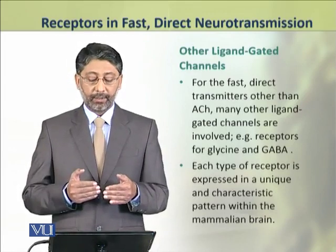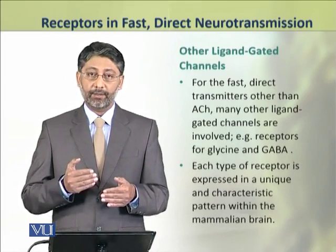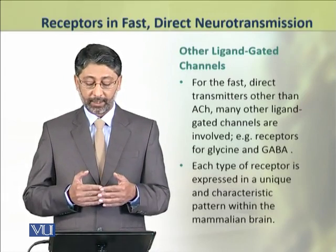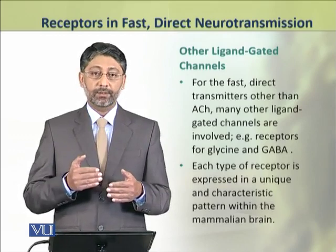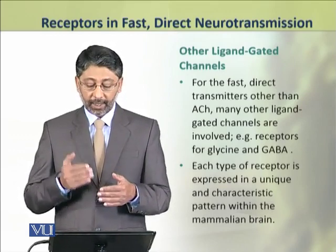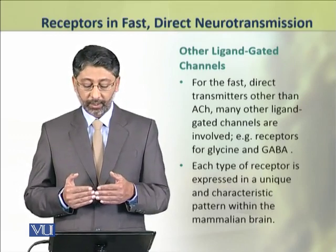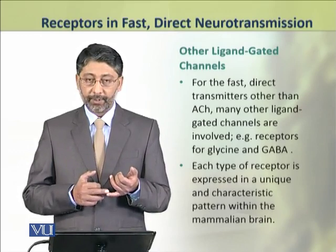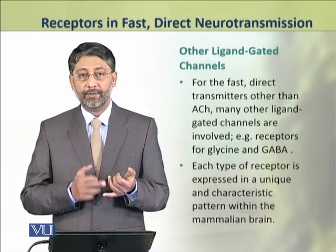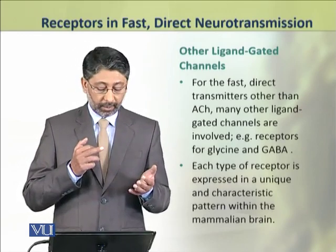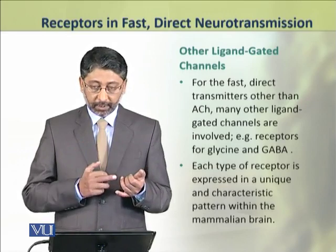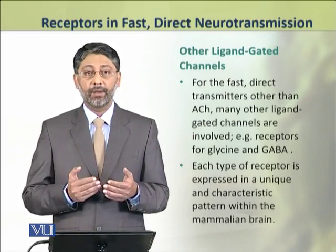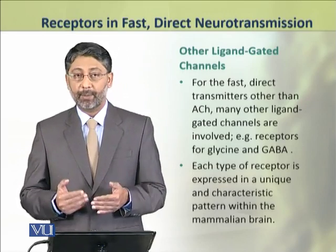Other ligand-gated ion channels found in cells or neurons are also involved in fast direct neurotransmission. There are many such receptors; these include glycine receptors and gamma amino butyric acid, that is GABA, receptors.